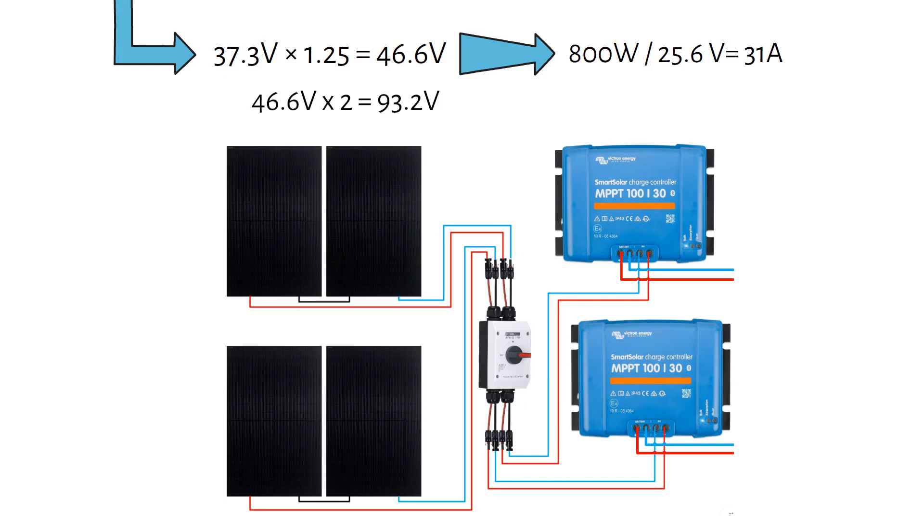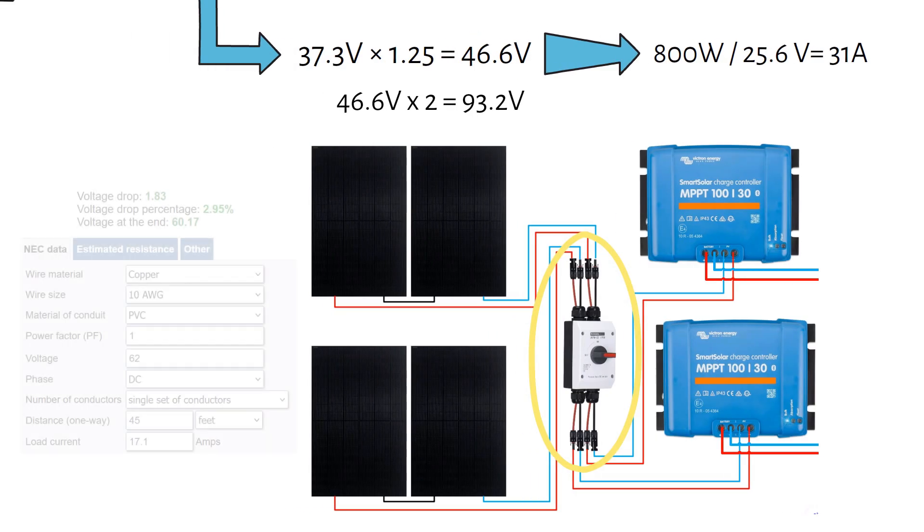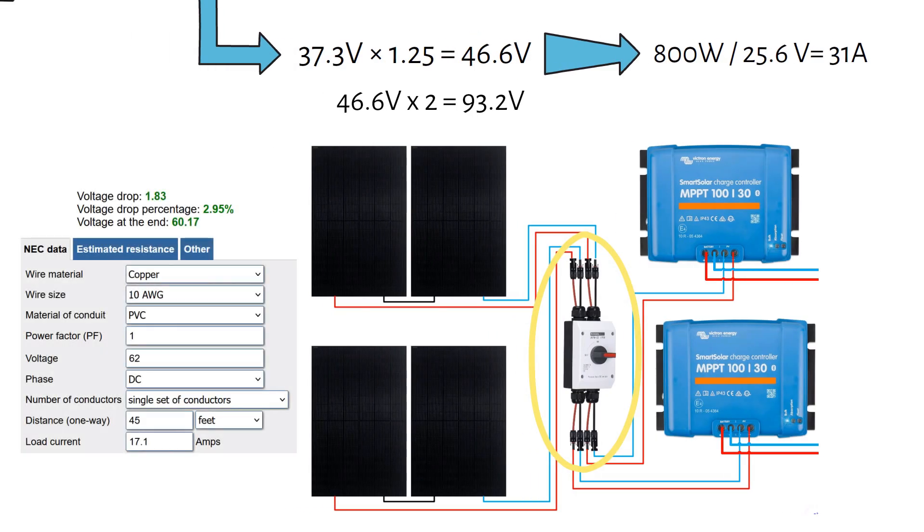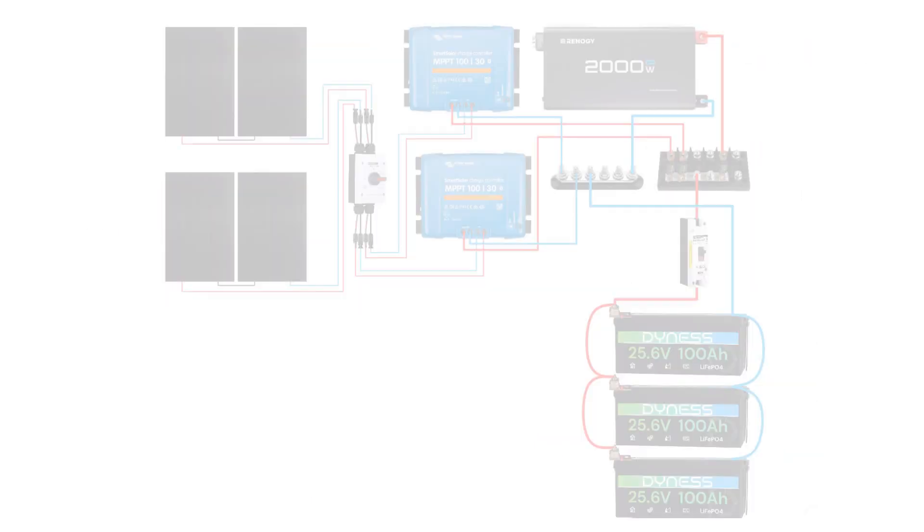I connect the panels through a solar disconnect switch. The cable run from the panels to the charge controller is about 45 feet or 14 meters. I use 10 gauge or 6mm square PV wire to keep the voltage drop under 3%.